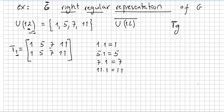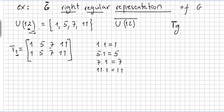This video is the continuation of the Cayley theorem that says every group is isomorphic to a group of permutations. As a group I took U12, the group of units modulo 12 — that is the set of integers less than 12 and relatively prime to 12 under multiplication modulo 12. It's easy to check that it is 1, 5, 7, and 11.